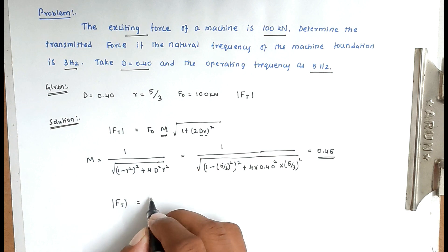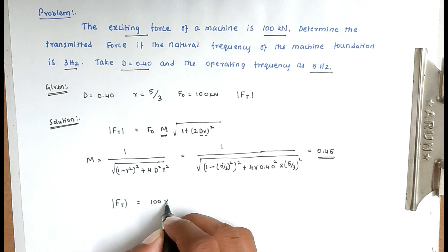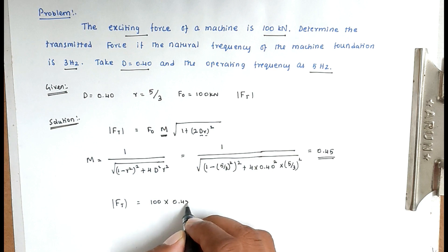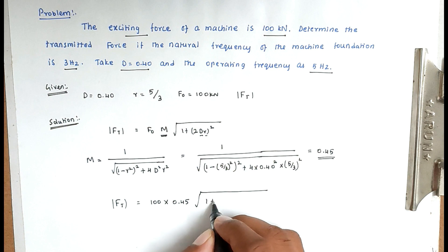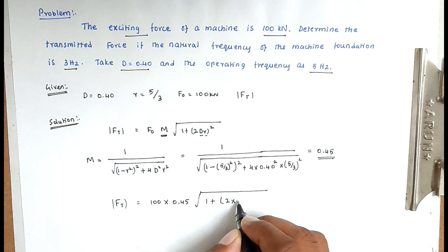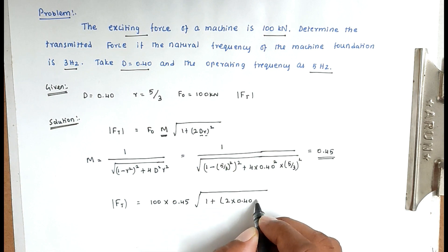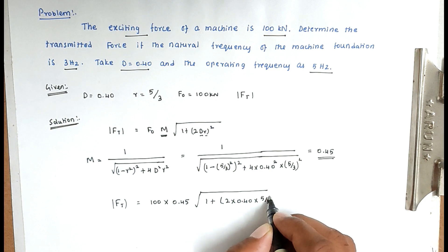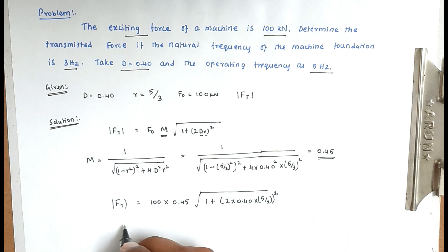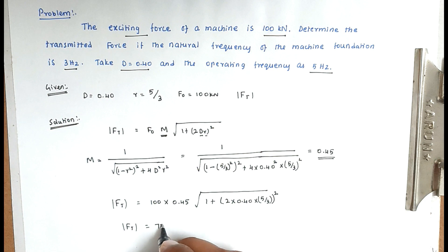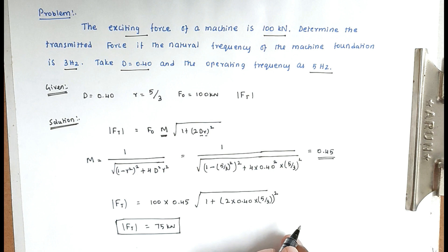Now, F₀ is given as 100, into M which is 0.45, into root of (1 plus (2 into 0.40 into 5/3) squared). Solving this, we get Ft — the force transmitted — equal to 75 kilonewton. This is the final answer. This is the method we can use to solve machine foundation problems. We will see more in the next video. Thank you.